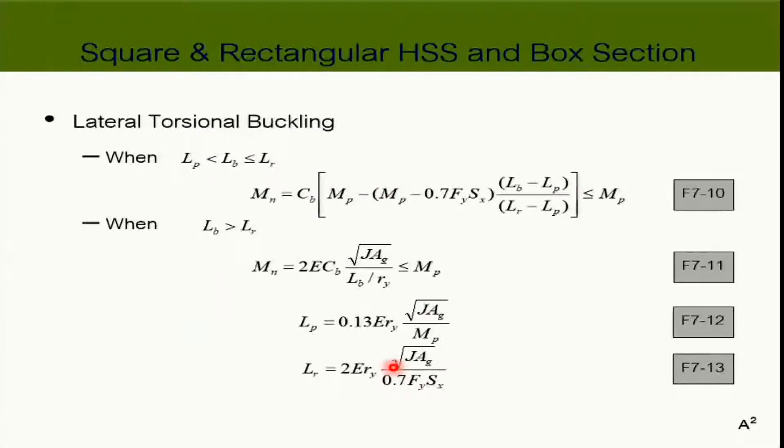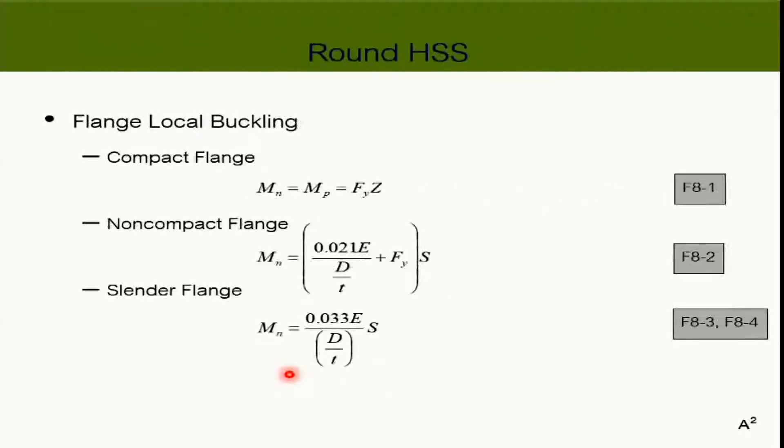So right now you need to check lateral torsional buckling of these sections as well based on this. But chances are it is highly unlikely that it will govern because the Lp, I think Lp and Lr when you calculate it, it's very very very large. So even if you calculate it, chances are it's not going to govern our design anyway. Now this is for the round shape and so on. I don't know about this, I have never done it myself, but if you have to calculate the round hollow steel section under bending moment, this is how you do it.